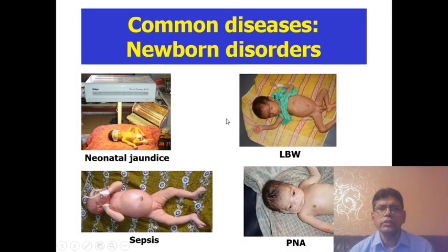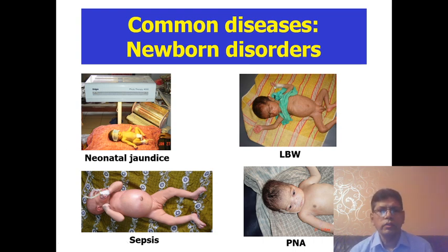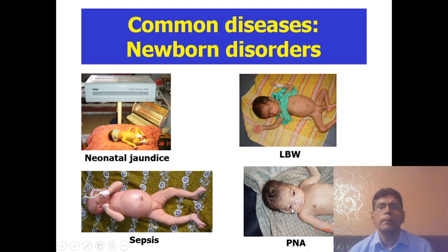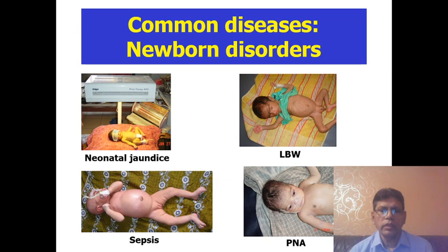Common diseases of the newborn: most important is neonatal jaundice — every newborn has jaundice by adult standards. Then low birth weight, sepsis, and perinatal asphyxia. Just four diseases in the neonatal period.